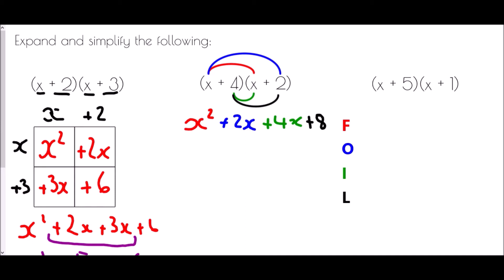Just like the previous example we've got four elements, but we need to simplify as well. So we collect the middle terms: x squared, plus two x plus four x is plus six x, and finally plus eight.